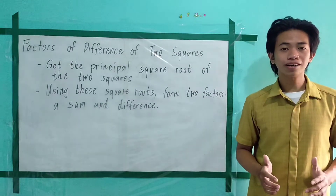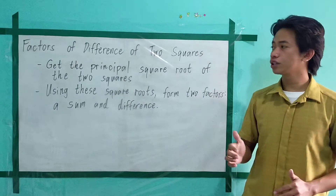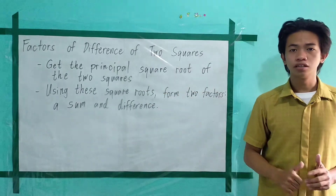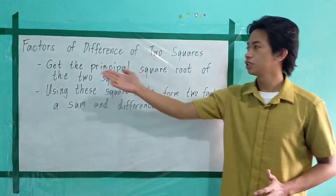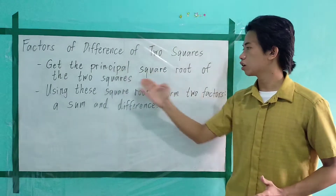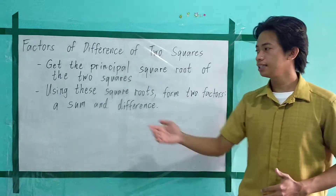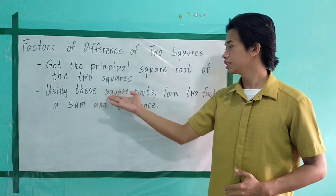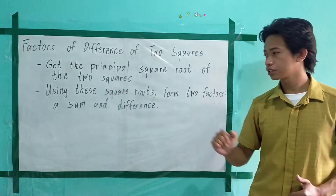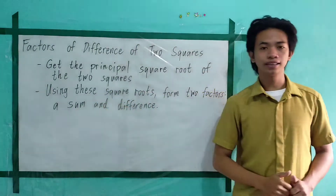There are two important things to remember in factoring difference of two squares. First, get the principal square root of the two squares. Second, using these square roots, form two factors — a sum and difference.